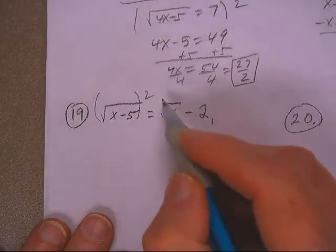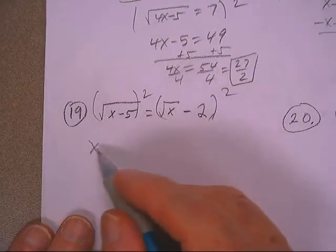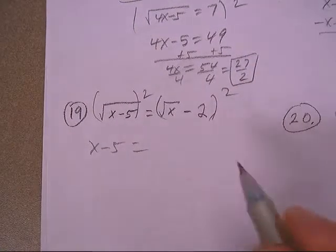Okay, on this one, we're just going to square both sides, so that one's x minus 5, that's easy enough.